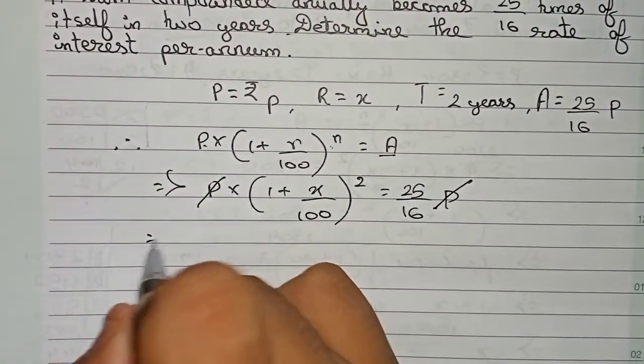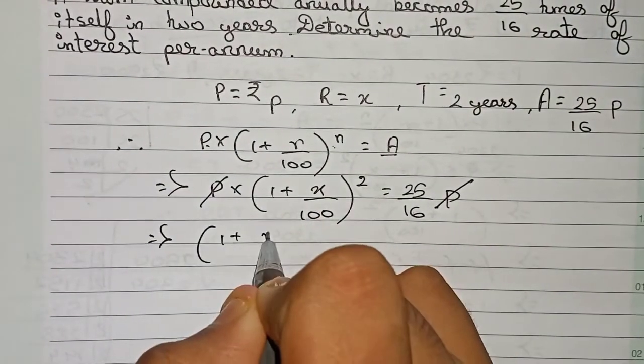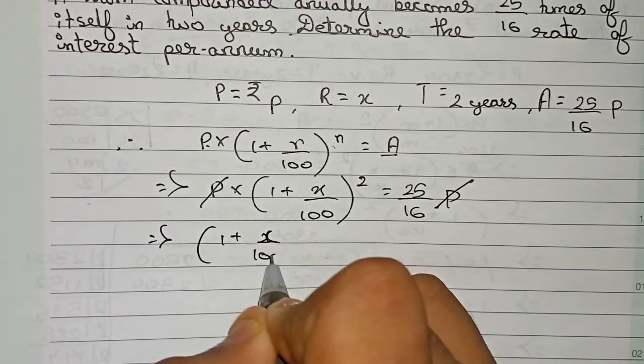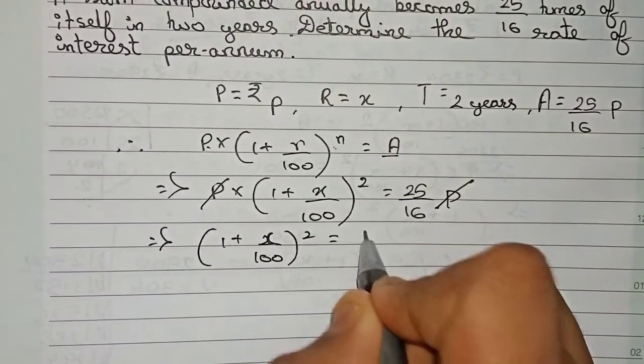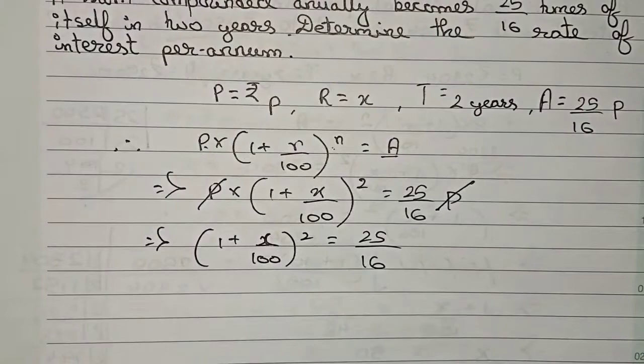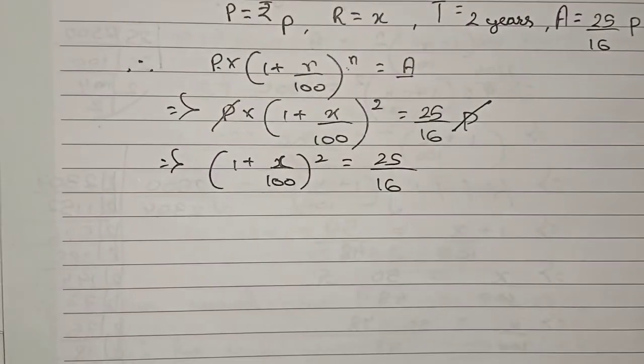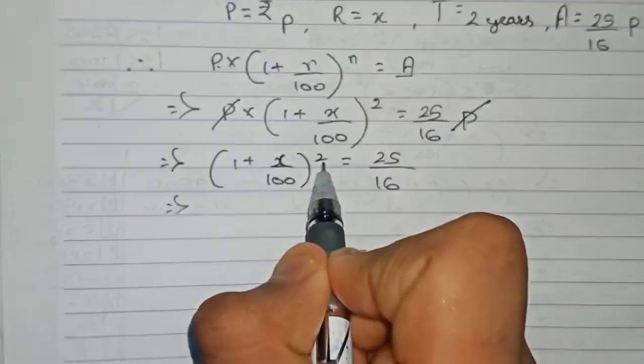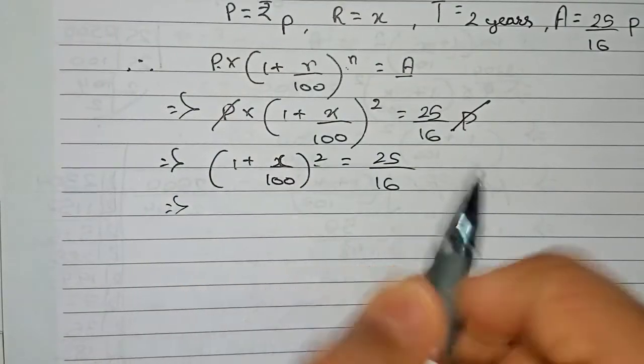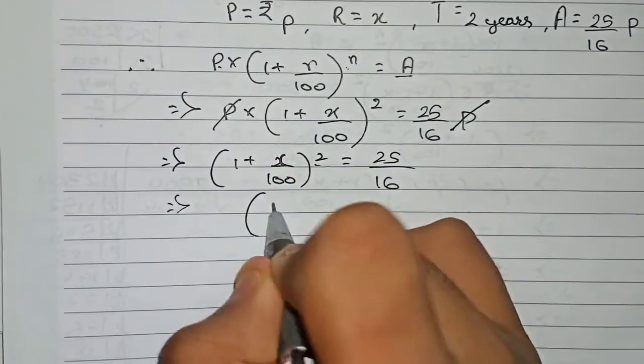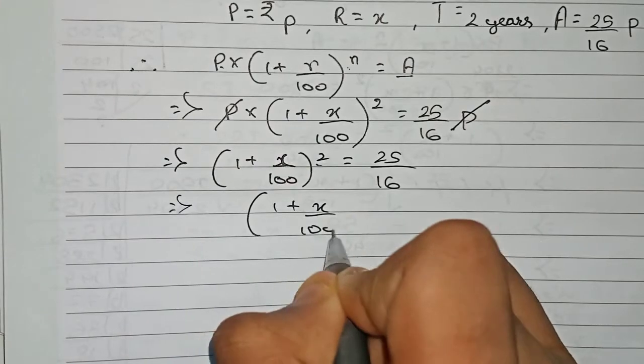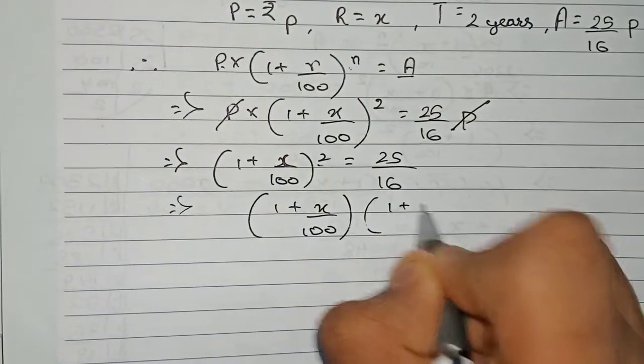So now only remains (1 plus x by 100) squared equals 25 by 16. Now you write, this is square, so that means this (1 plus x by 100) will be written two times, so you write (1 plus x by 100) into (1 plus x by 100) equals 25 by 16.